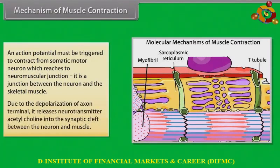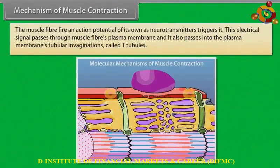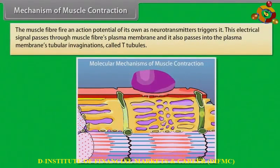The neuromuscular junction is a junction between the neuron and the skeletal muscle. Due to the depolarization of the axon terminal, it releases neurotransmitter acetylcholine into the synaptic cleft between the neuron and muscle. The muscle fiber fires an action potential of its own as neurotransmitters trigger it. This electrical signal passes through the muscle fiber's plasma membrane and into the membrane's tubular invaginations called T-tubules.